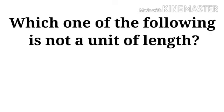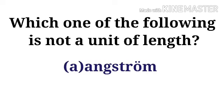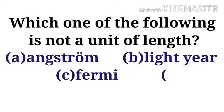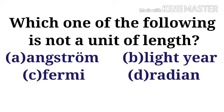Which one of the following is not a unit of length? And the options are: Option A, Angstrom. Option B, Lightyear. Option C, Fermi. Option D, Radian.